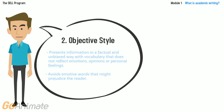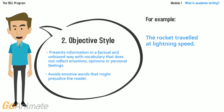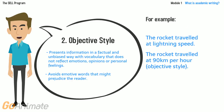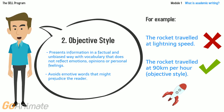Objective style discloses information in a factual and unbiased way, with vocabulary that does not reflect emotions, opinions, or personal feelings. For example, "the rocket traveled at lightning speed" could be more objective if written as "the rocket traveled at 90 km per hour."